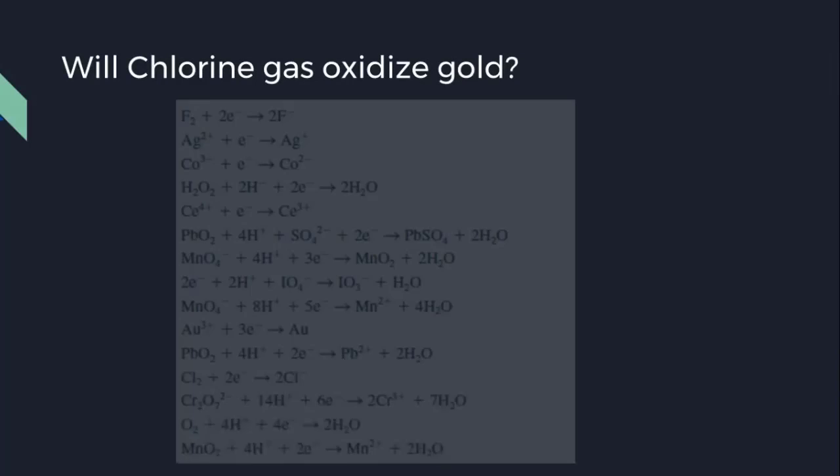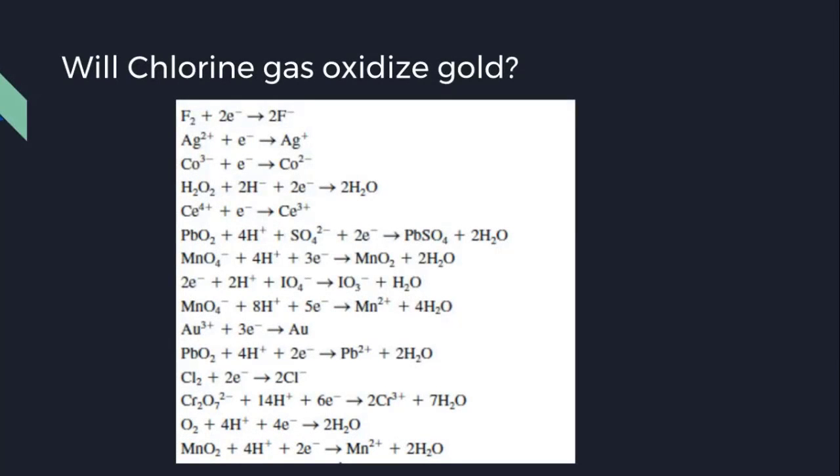Let's look at two examples. Will chlorine gas oxidize with gold? On the reduction table, we first find chlorine gas, and we find it over here.